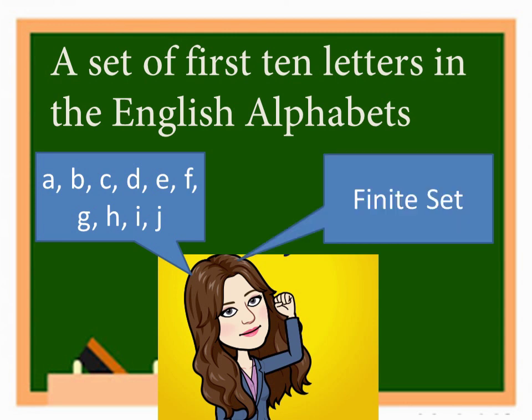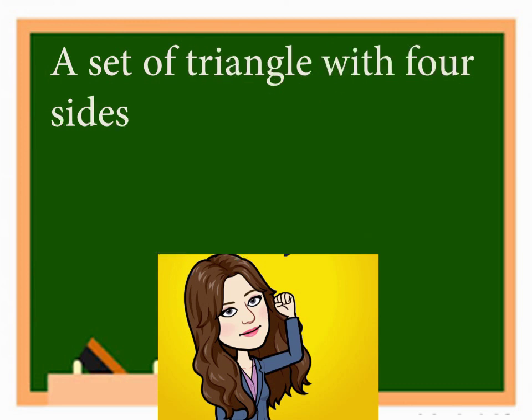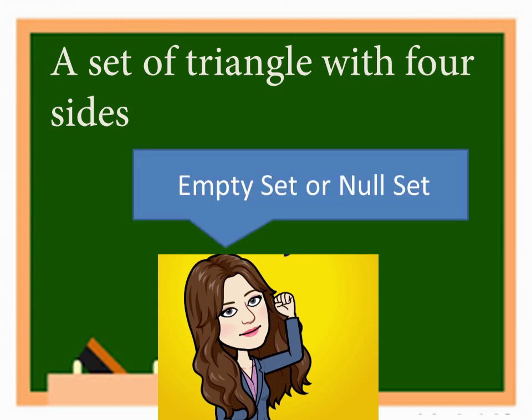Another one. A set of triangles with four sides. Is there a triangle that has four sides? No. There is no triangle that has four sides. So, the answer is empty set, or null set. This set is an empty set, or null set.